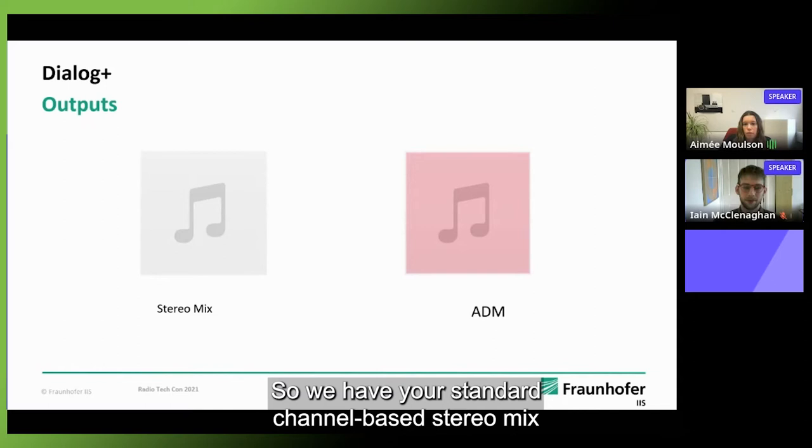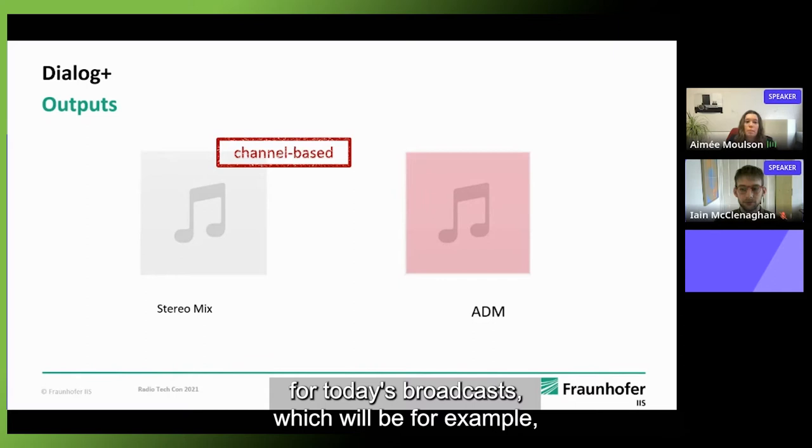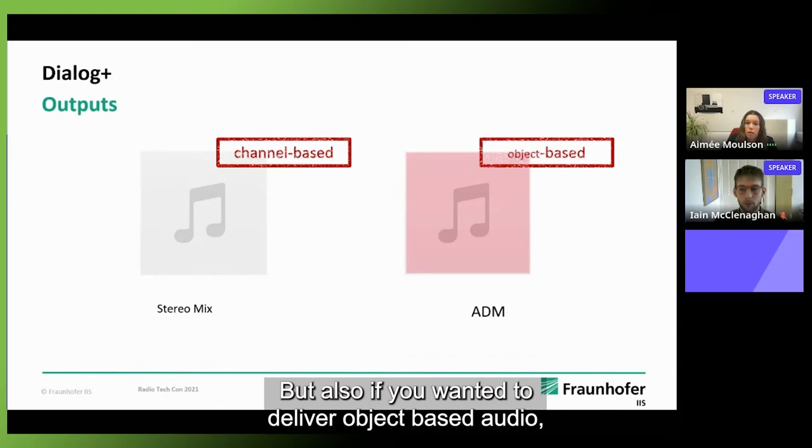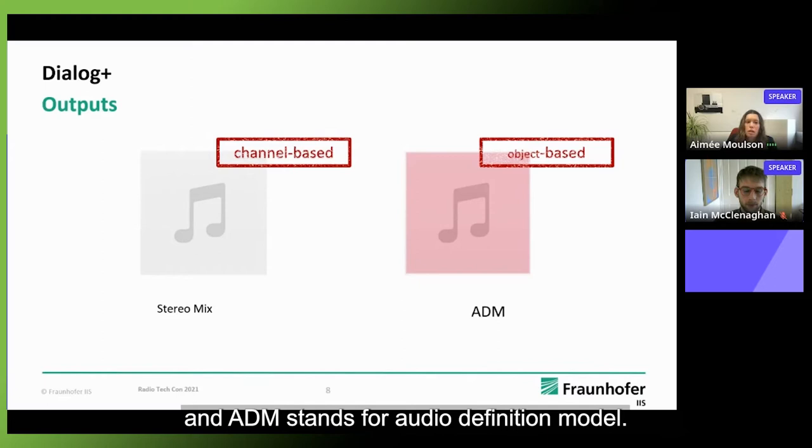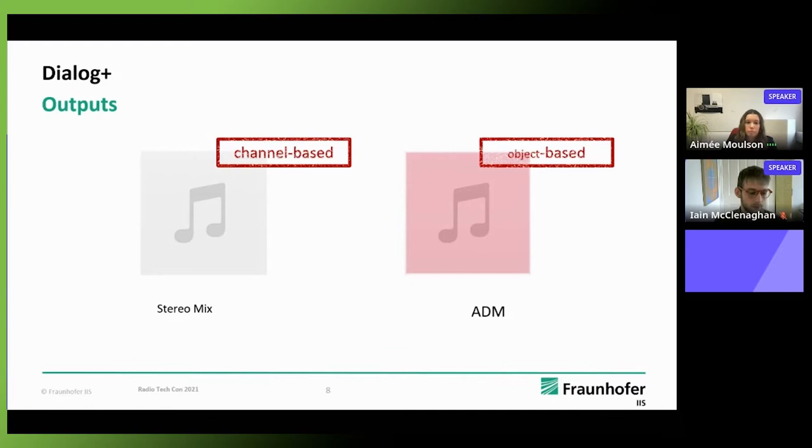So there's two ways of outputting the file. We have your standard channel based stereo mix for today's broadcasts, which will be for example for legacy video on demand services. But also if you wanted to deliver object-based audio we have the option for ADM and ADM stands for Audio Definition Model. This allows us to contain not only the audio but all kinds of metadata like interactivity options, down mix parameters, dynamic range control data and here the separated dialogue and background are contained as audio objects.